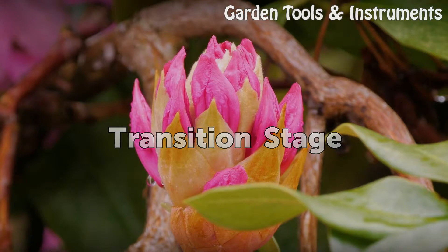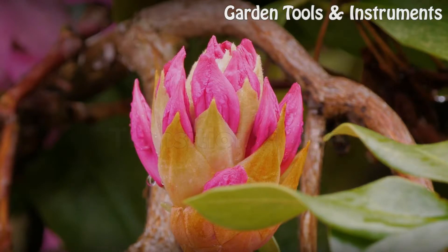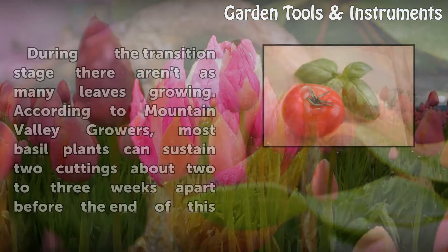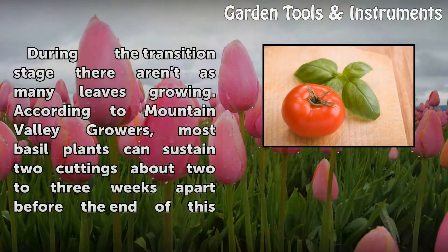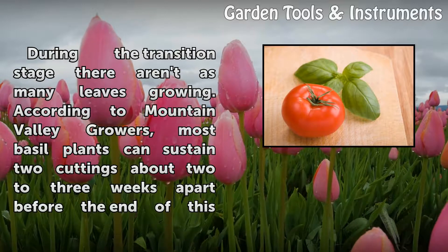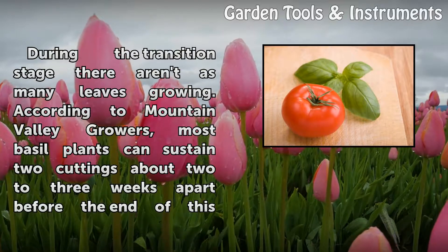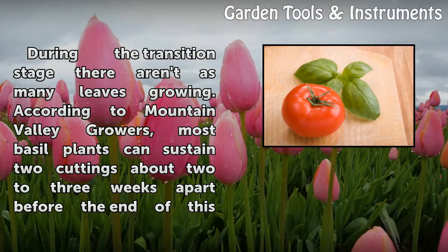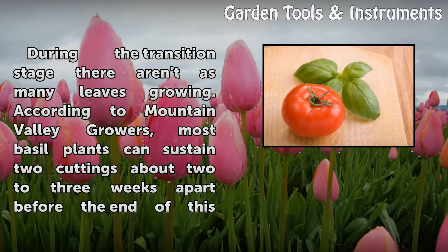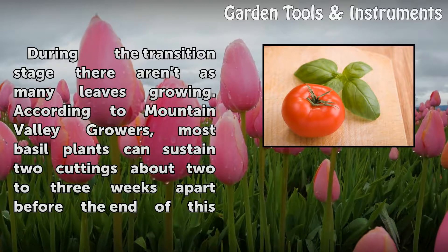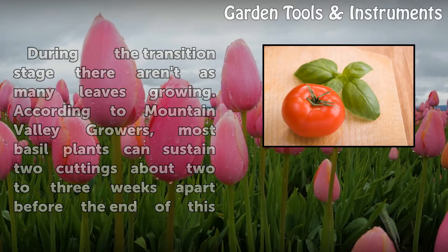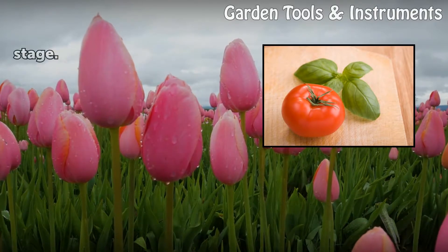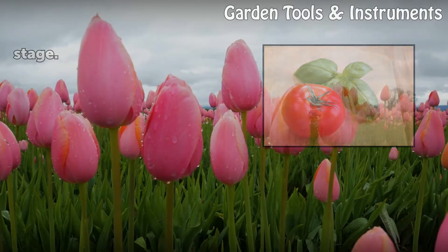Transition Stage: During the transition stage there aren't as many leaves growing. According to Mountain Valley Growers, most basil plants can sustain two cuttings about two to three weeks apart before the end of this stage.